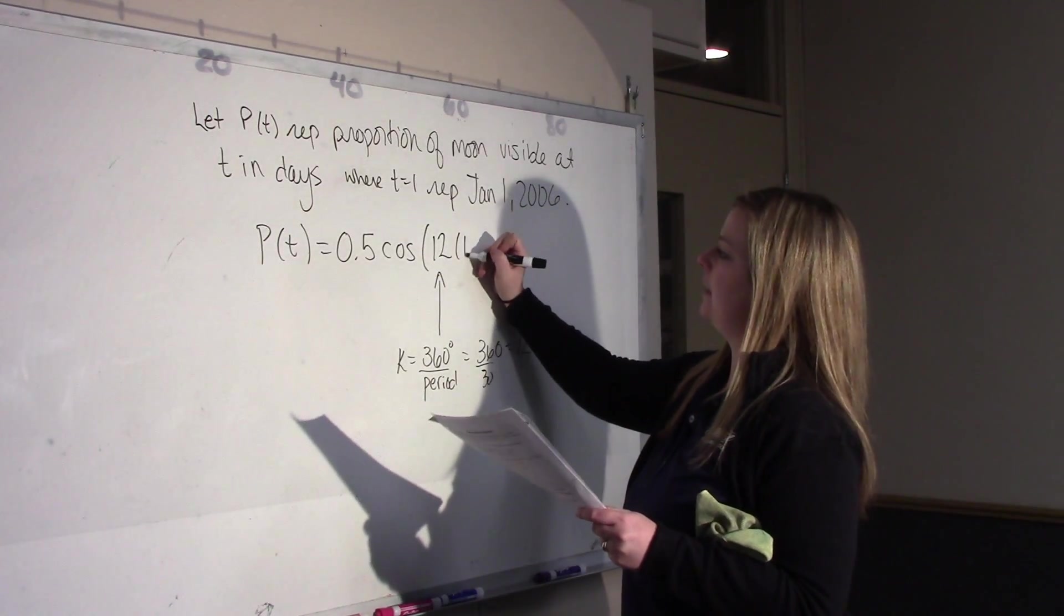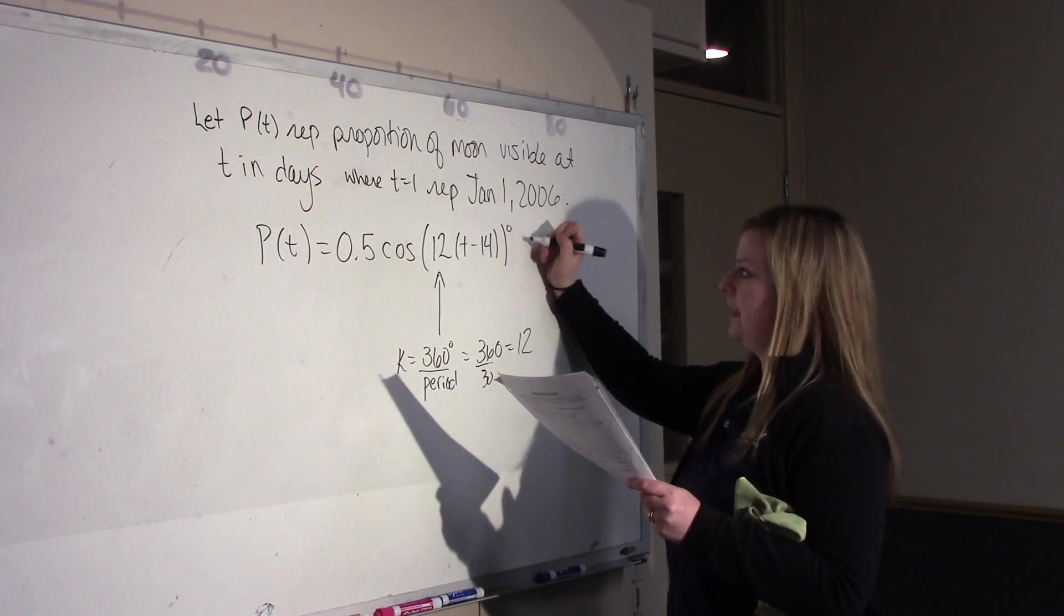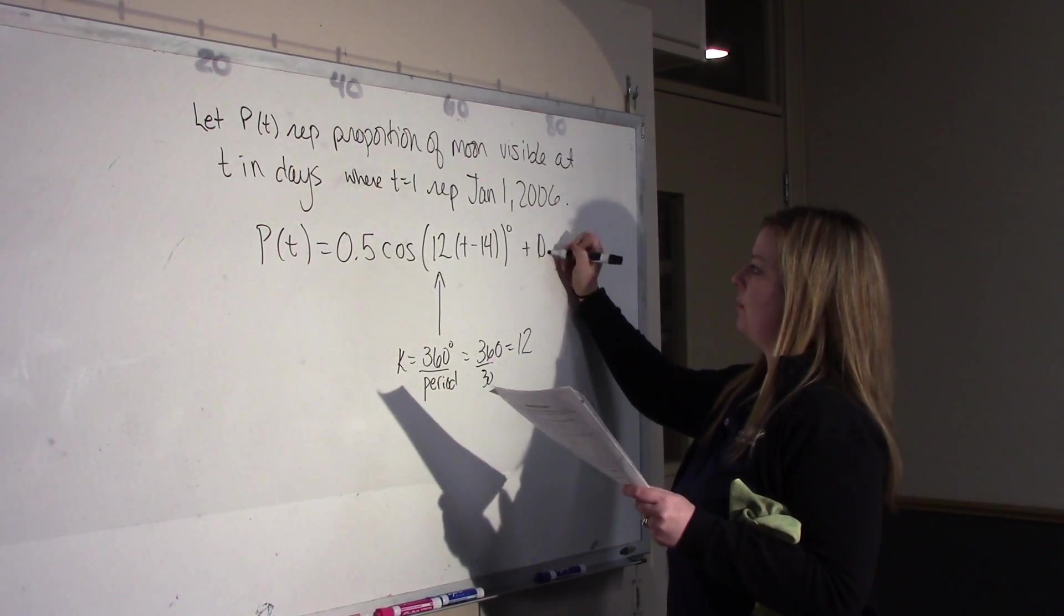T minus 14. And that's in degrees. And then add my axis of 0.5.